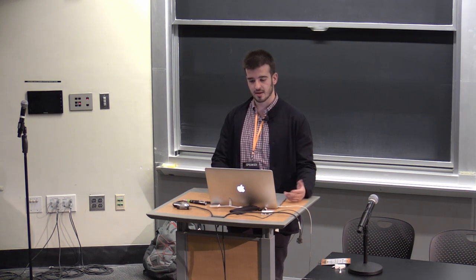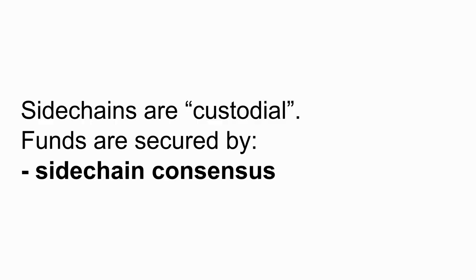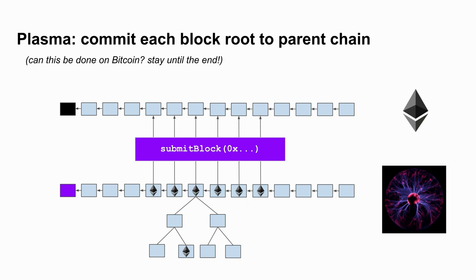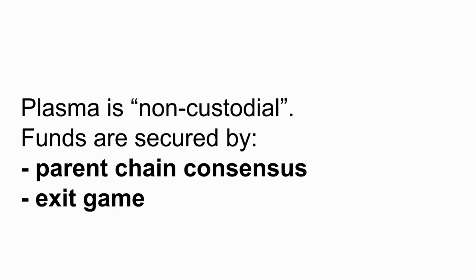So let's try to do better. The problem is that you have the sidechain consensus governing the security of funds. With Plasma — and notice how I have the Ethereum logo here because we don't know yet if this can be done in Bitcoin — the process is that each Plasma block, you take its Merkle root and commit it back to the original chain. This is done by an untrusted database manager called the operator, who gathers all transactions, puts them in the Plasma block, and commits it.